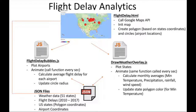The DrawWeatherOverlay.js file performs a similar task for weather parameters such as temperature, amount of rainfall, and precipitation for a particular month. The average minimum temperature for each month updates the color for each state according to the temperature color scale.